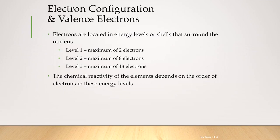Now, let's go on to electronic configuration and valence electrons. What is an electronic configuration? Electronic configuration is the arrangement of the electrons in different energy levels.